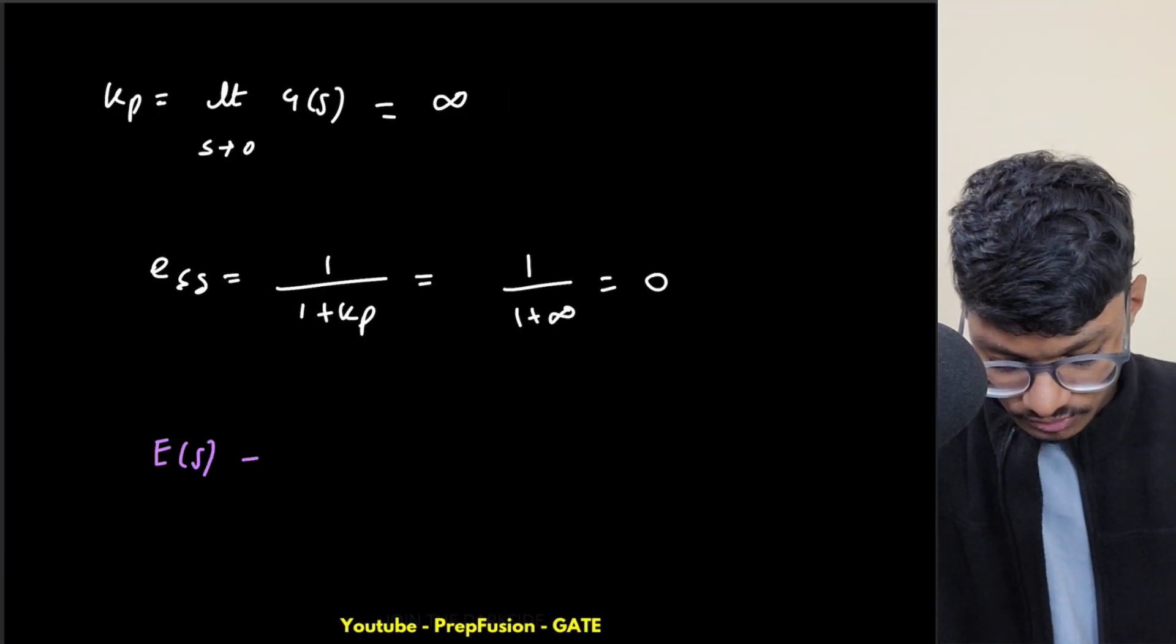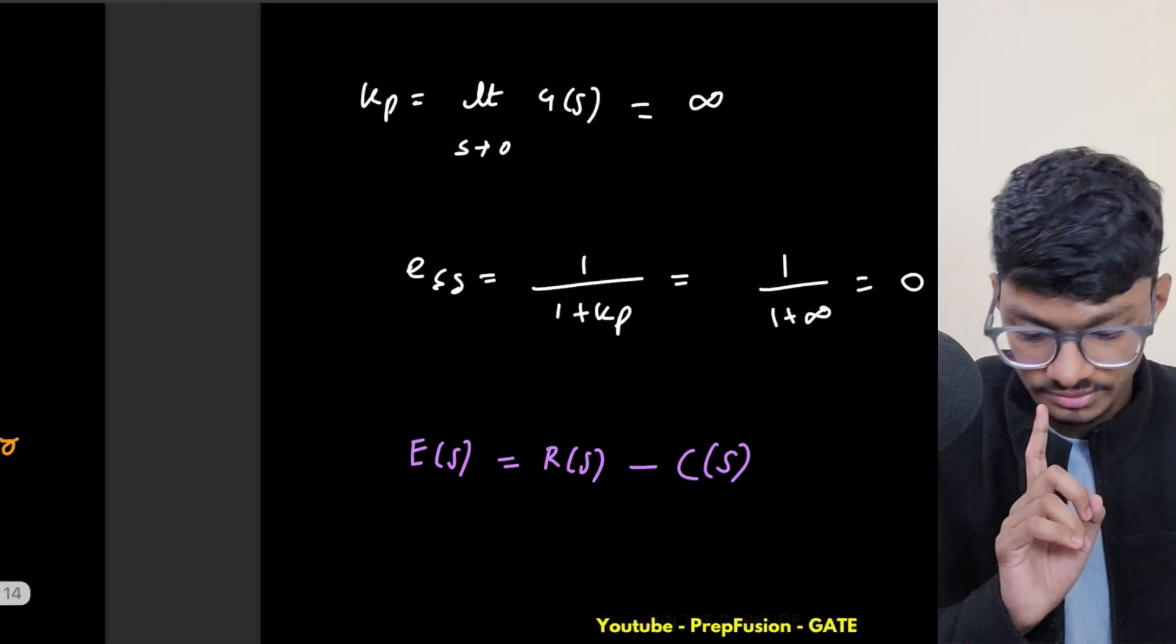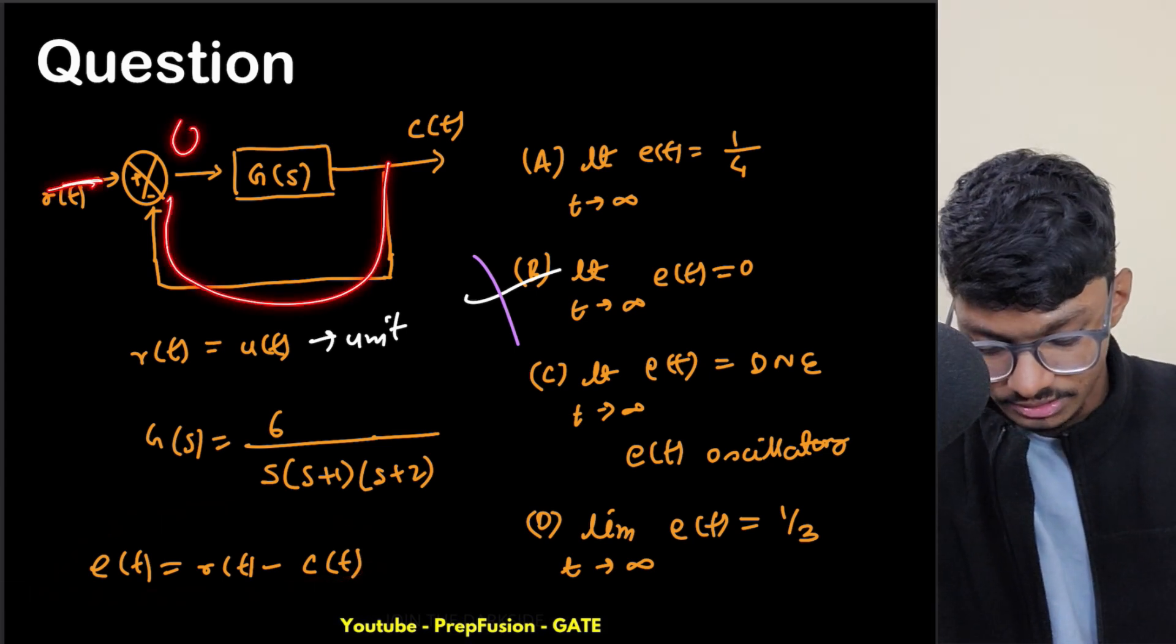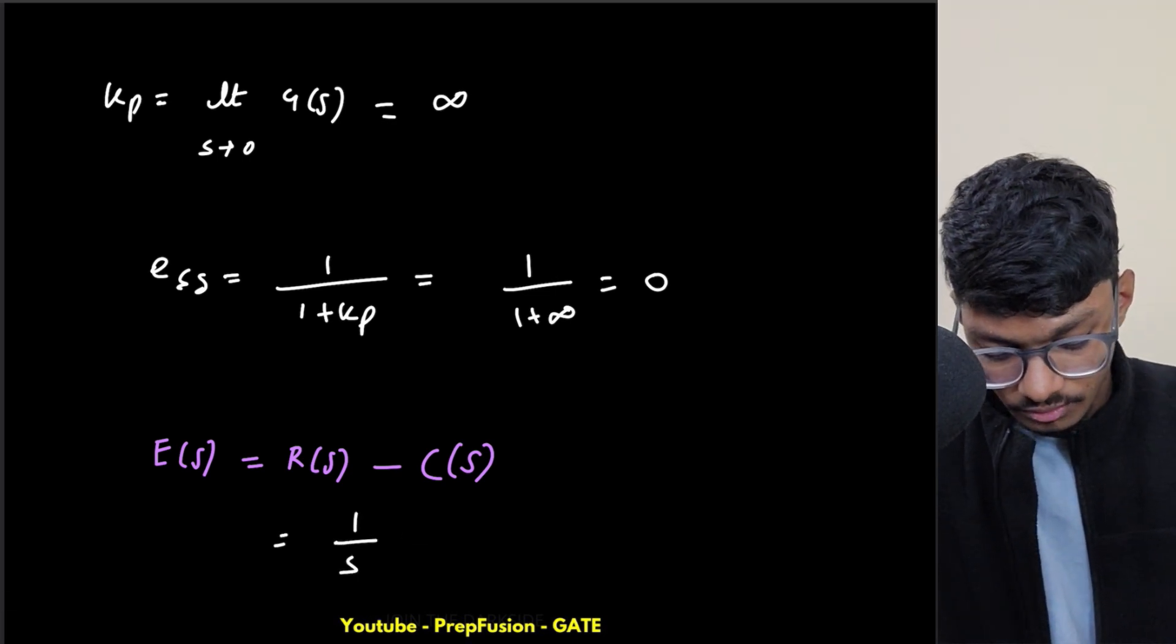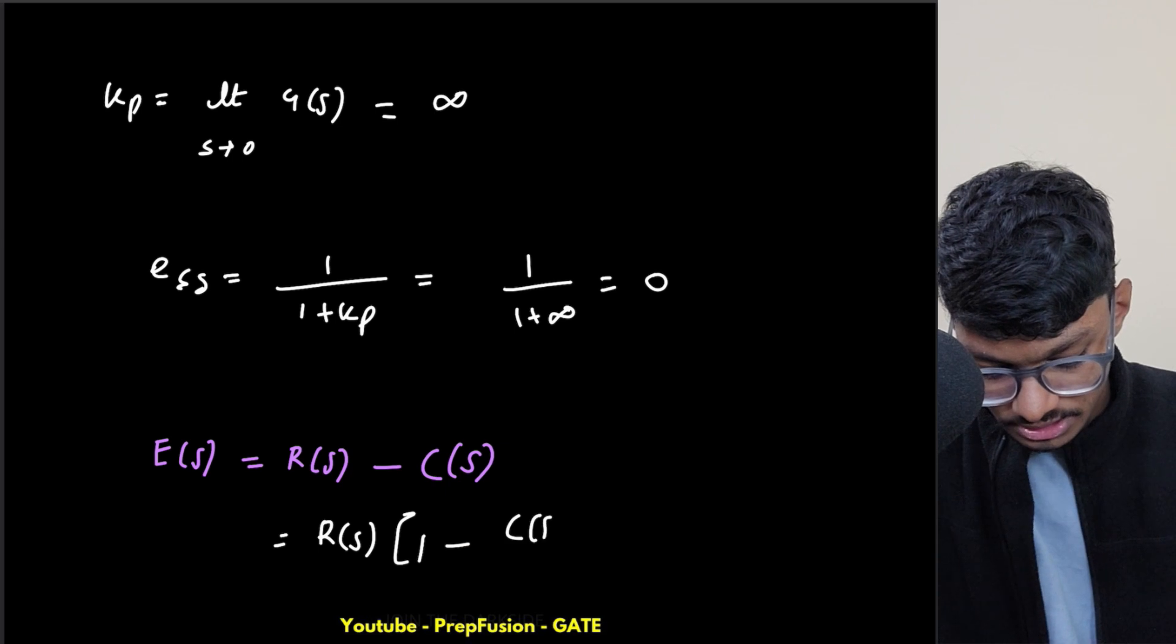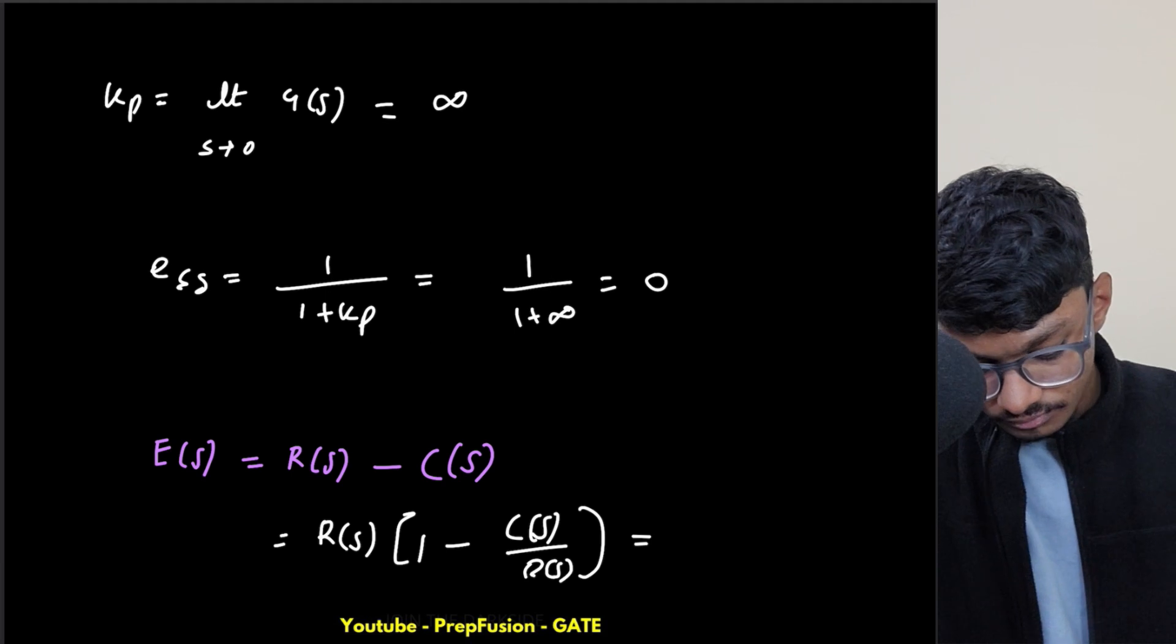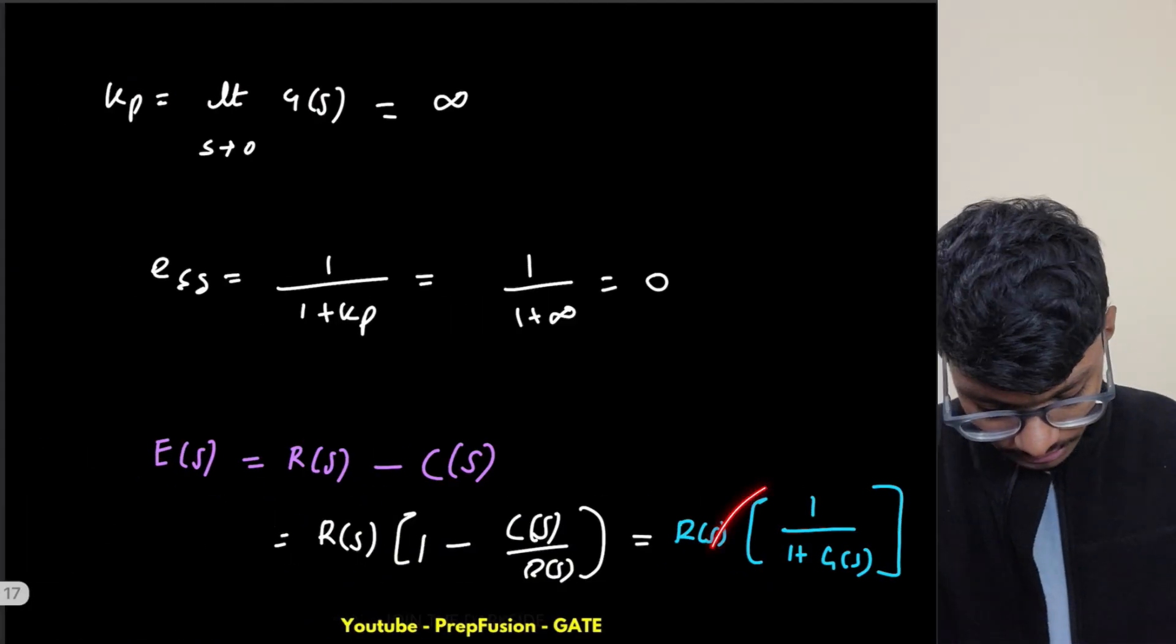So let's find the error now. What is E(s)? E(s) will be simply R(s) minus C(s). Now C(s) is coming over here and R(s) is here. My R(s) is 1/s. What I can do is take common R(s) here, which we usually do to derive the formulas. So 1 minus C(s)/R(s), which is the transfer function. What is this equal to? My transfer function – this whole thing – 1 upon 1 plus...